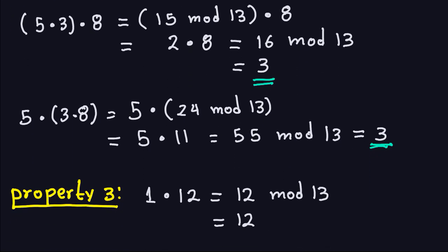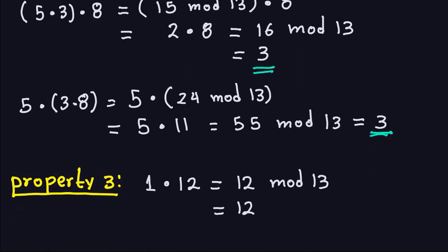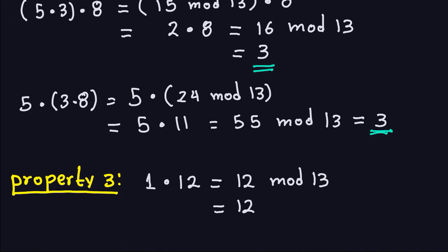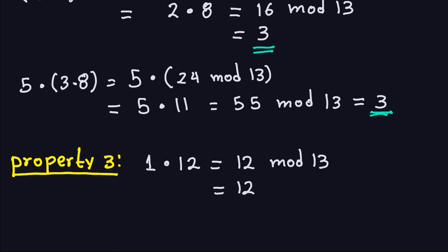Property three — the identity — is fairly straightforward: one multiplied by any element gives back that element. For example, 1 · 12 = 12 modulo 13, which is just 12. Nothing surprising there.